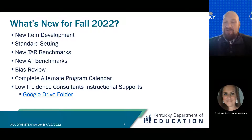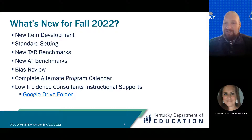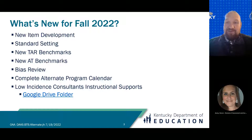A new change will be the alternate program calendar, which takes all the dates for OAA, OCTE, and the data wings and compiles them into one calendar. Any significant dates for the AKSA, the TAR, the SRD, the CRD, the CWEC, or the ESAR will be communicated on this calendar. Also, low incidence consultants have made instructional support resources to share with teachers across the state — please share these valuable resources with your teachers.